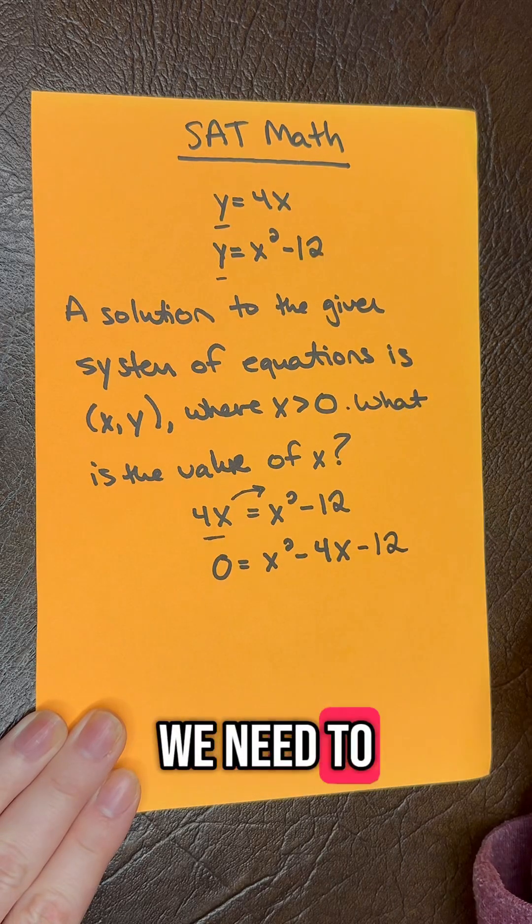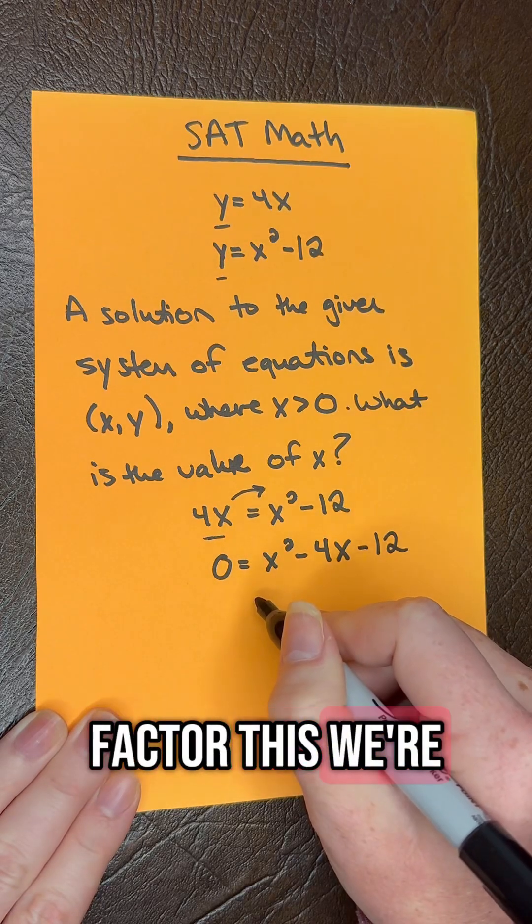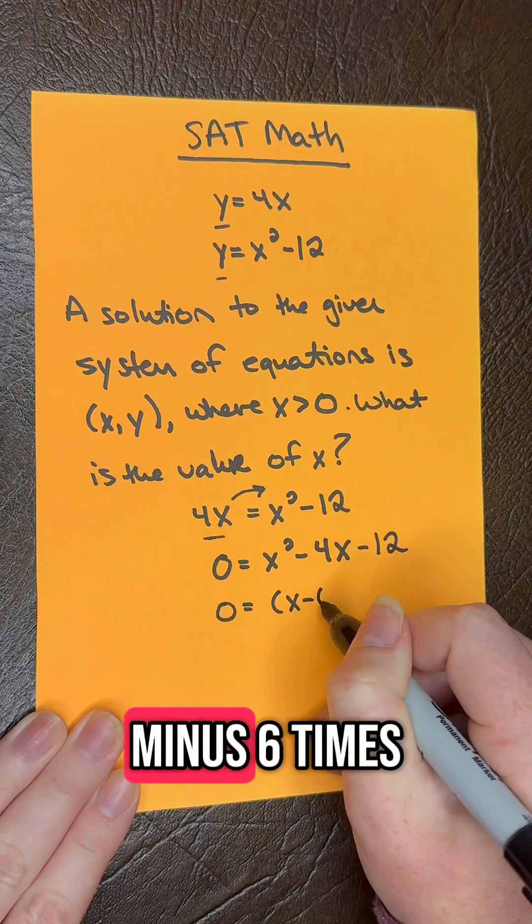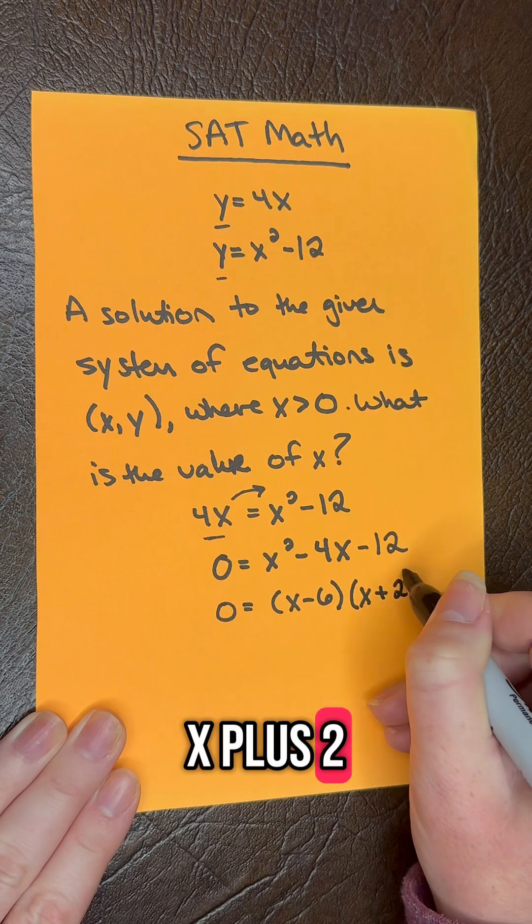Now we need to factor the quadratic. So when we factor this, we're going to get 0 equals (x minus 6) times (x plus 2).